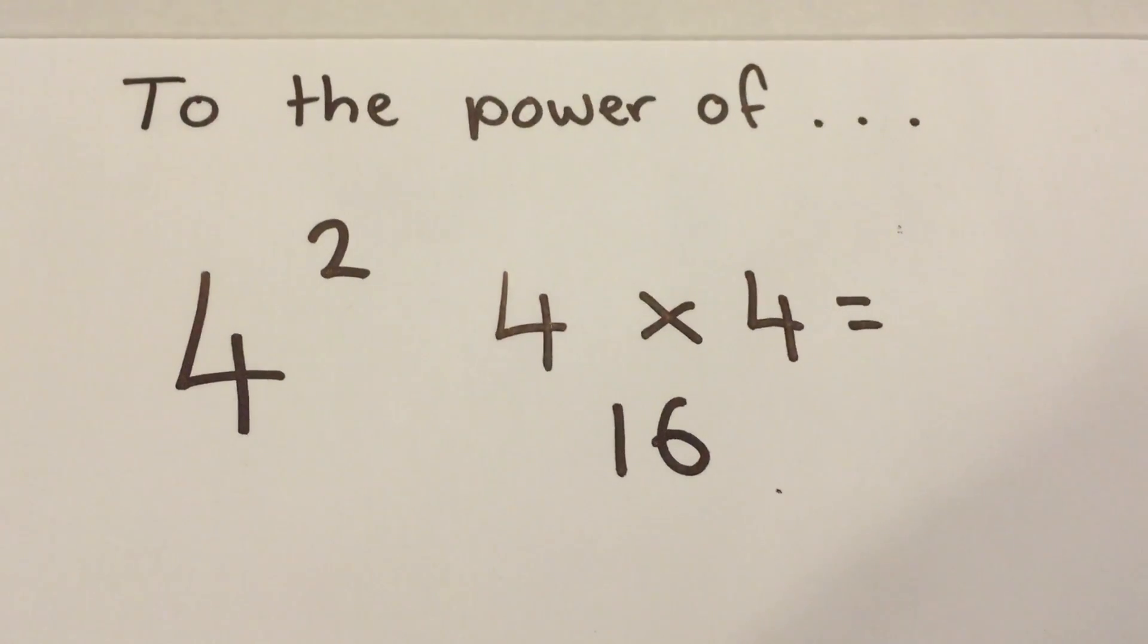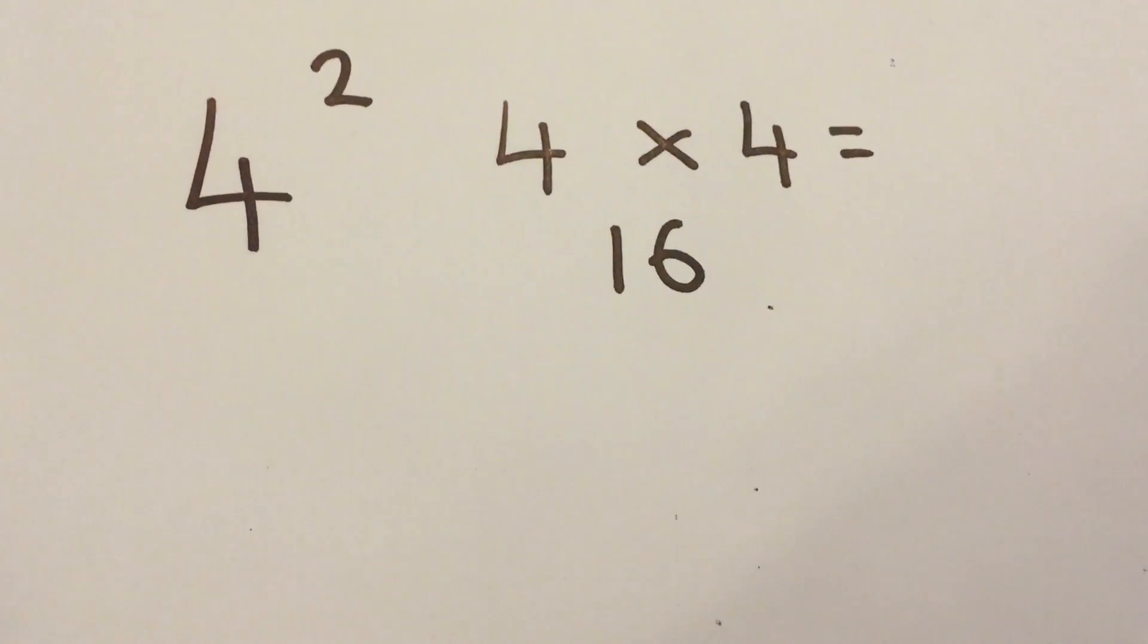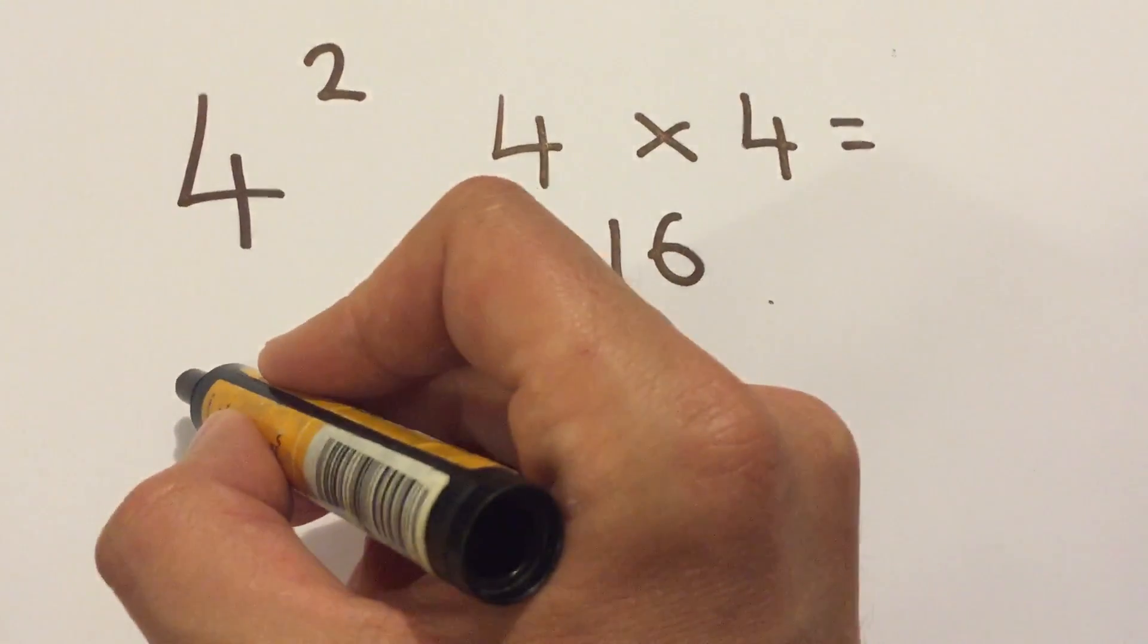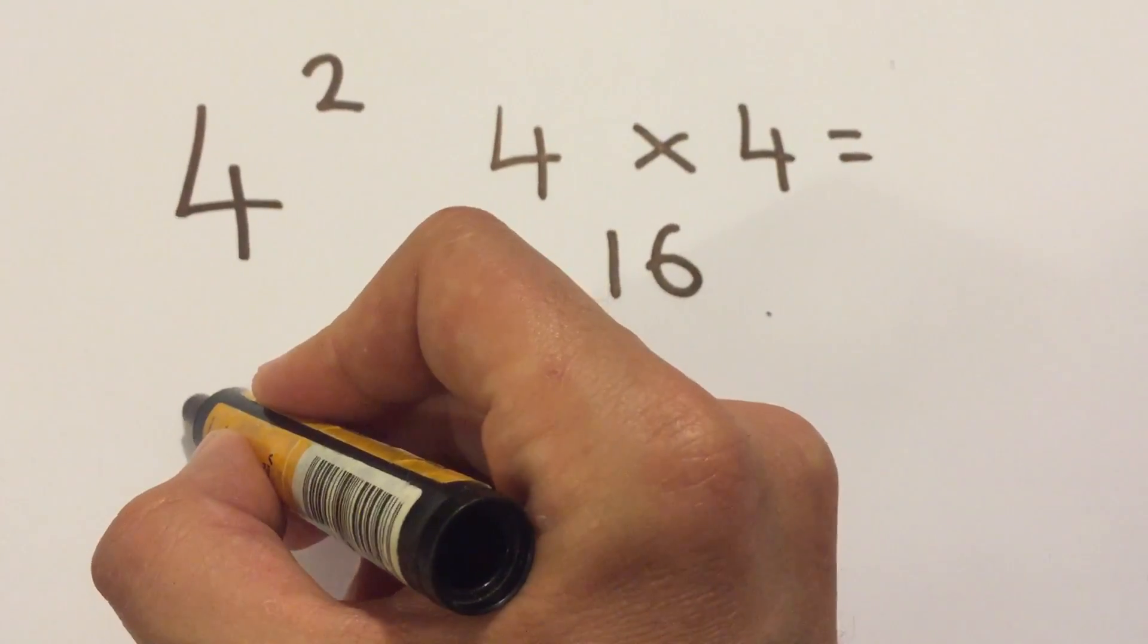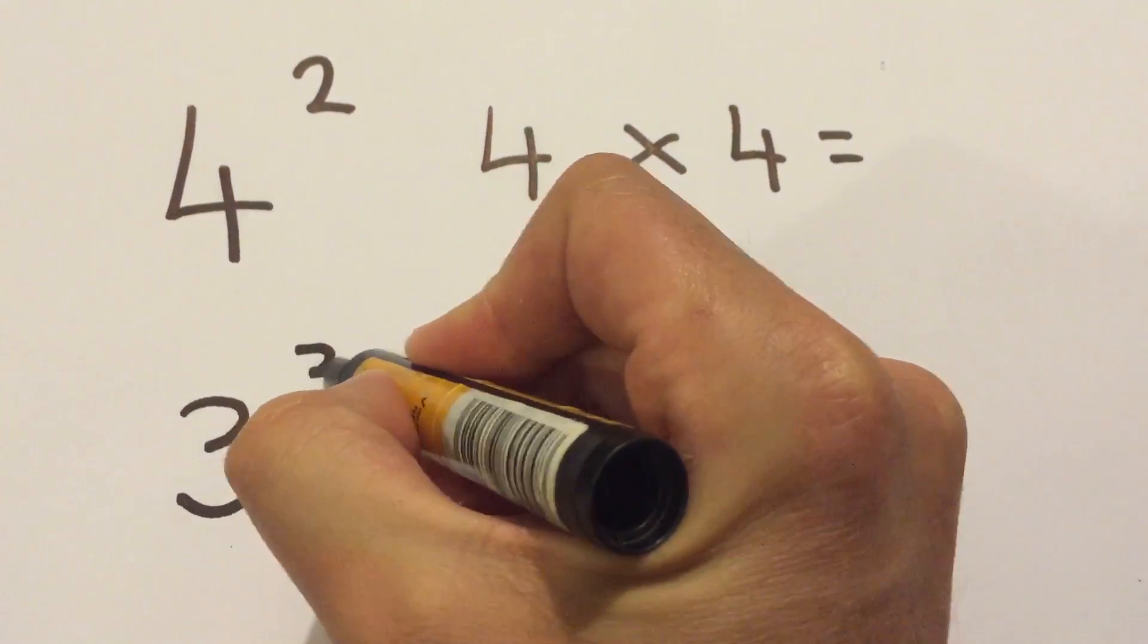Alright, I'm going to go one step further as well. Obviously to the power of doesn't just mean that it can be to the power of 2, but also, let's just use another number, a 3. What if it was 3 to the power of 3?